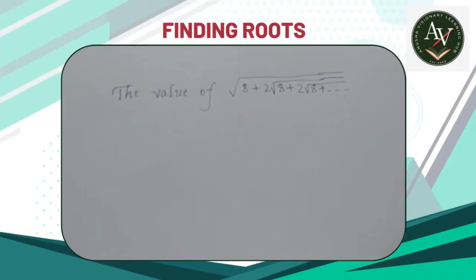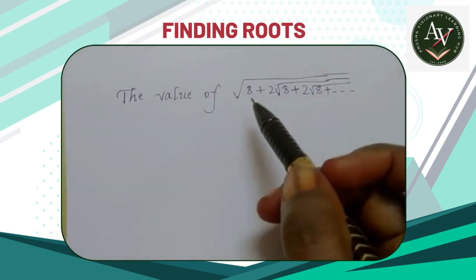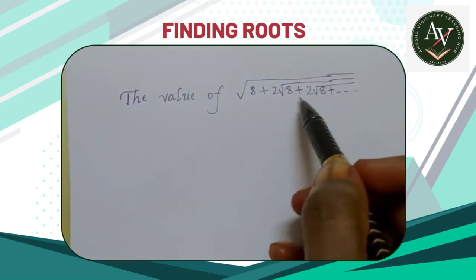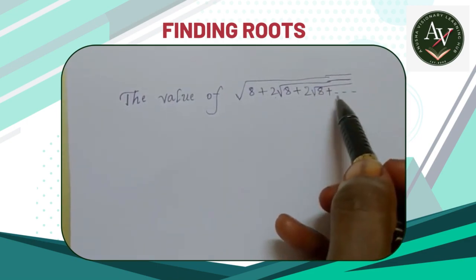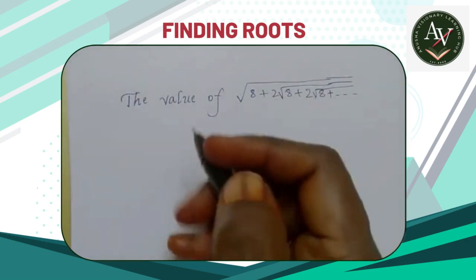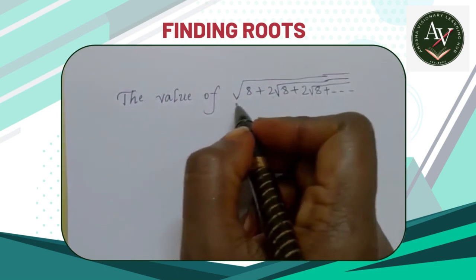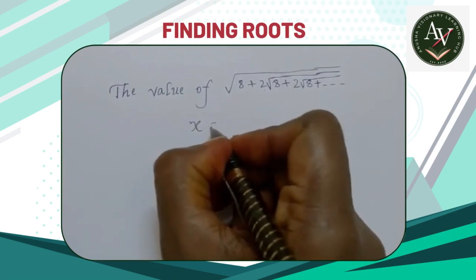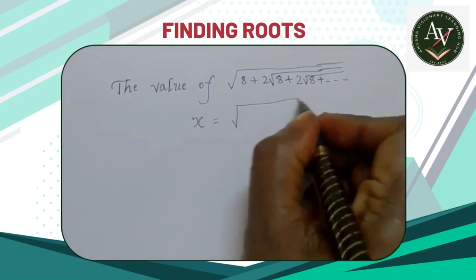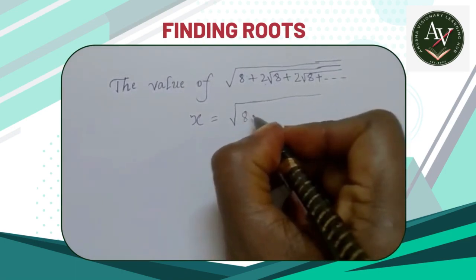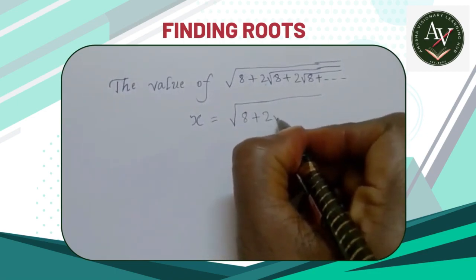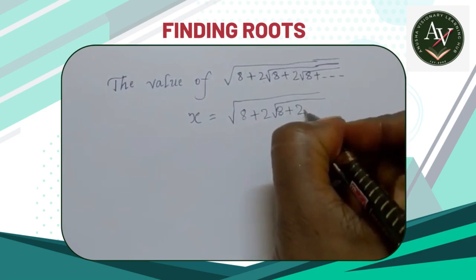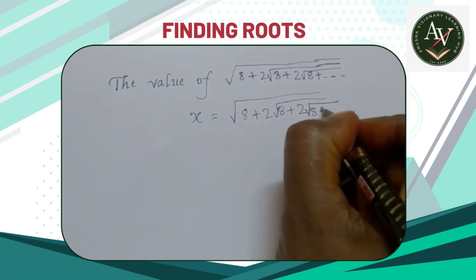Hello students, let's find the value of √(8 + 2√(8 + 2√(8 + ...))). Now just consider the given question as x = √(8 + 2√(8 + 2√(8 + ...))).